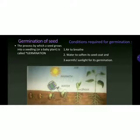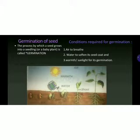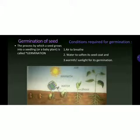What does a seed require to grow? The very first condition required is air to breathe. Just like we need oxygen to breathe, plants also need air to breathe and grow. Second, water is needed to soften the seed coat. We just learned that the seed coat is a safety coat, so water softens it. The embryo absorbs a lot of water and gets nutrients from it, and then finally comes out.